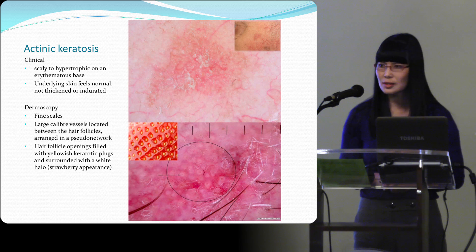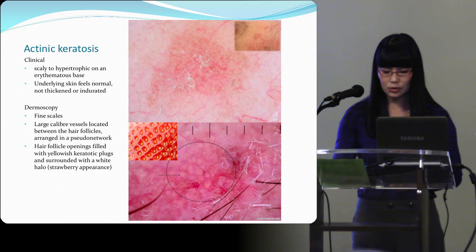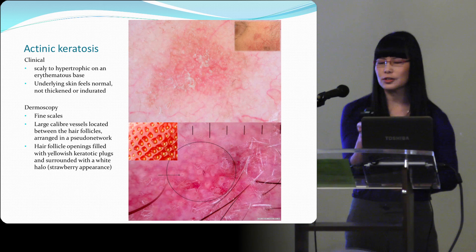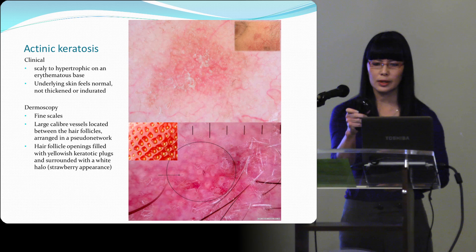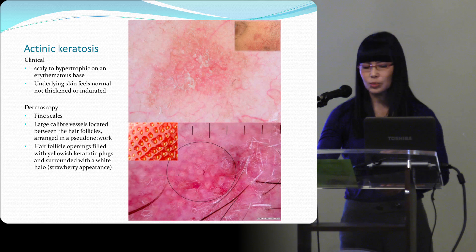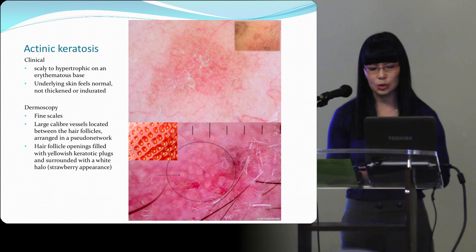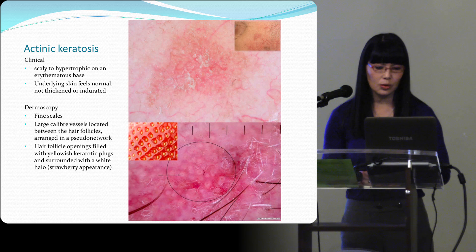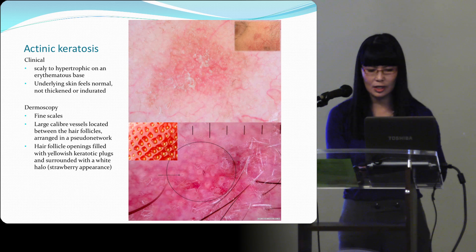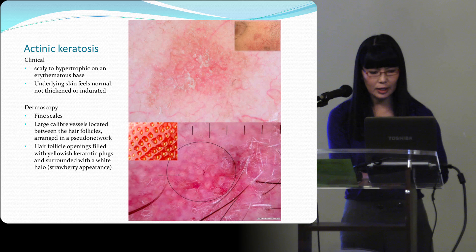An actinic keratosis is a scaly to hypertrophic lesion on an erythematous base, but the underlying skin feels normal — not thickened or indurated. Dermoscopy uses a handheld unit with ten times magnification and polarized light, allowing you to see structures not visible to the naked eye. It's very helpful to distinguish cancers from non-cancerous lesions. In dermoscopy of actinic keratosis, you see fine scales and large caliber vessels arranged between the hair follicles in a pseudo-network.